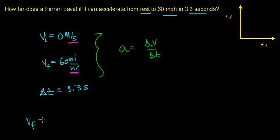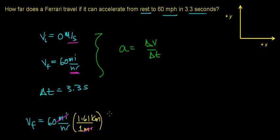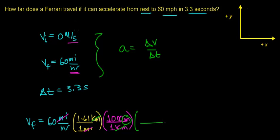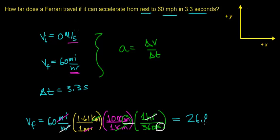This should be a good review problem. Our final velocity is 60 miles per hour, and we're going to convert it to meters per second. We know that one mile equals 1.61 kilometers — the miles cancel. Then one kilometer equals 1,000 meters — the kilometers cancel. Finally, one hour has 3,600 seconds — the hours cancel. This gives us units of meters per second, which works out to be 26.8 meters per second.